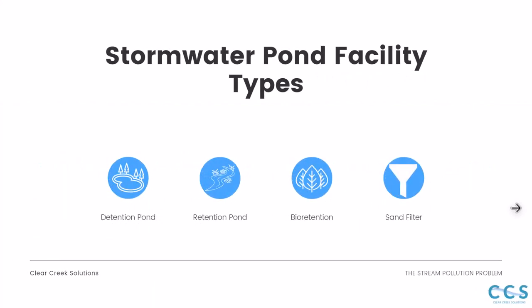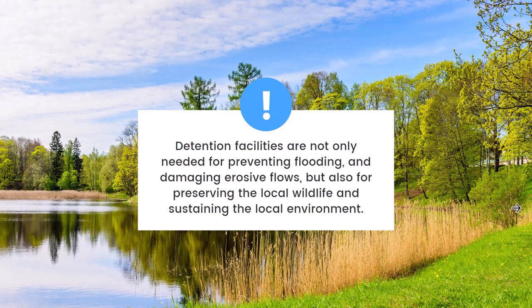Common facility types include detention ponds and retention ponds. Bioretention facilities are a form of LID, or low impact design, that allows for filtration and cleaning of stormwater as it moves through the facility. Sand filters can provide more specific filtering of stormwater. Detention facilities are needed not only for preventing flooding and preventing damaging erosive flows, but also for preserving local wildlife and sustaining the local environment.